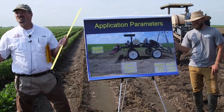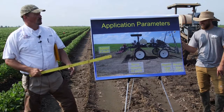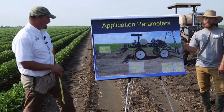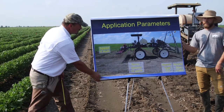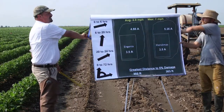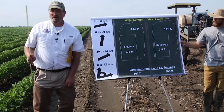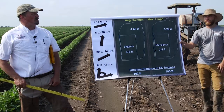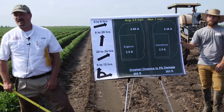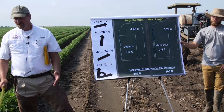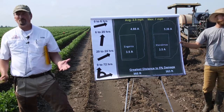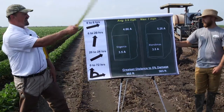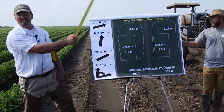The weather station also recorded wind direction, so we knew which way the wind was coming from. We made that application on July 20th starting at 11:56, and the spray application stopped at 12:19. Basically we were making a noon application of dicamba with a 2.9 mile per hour wind coming out of due west.